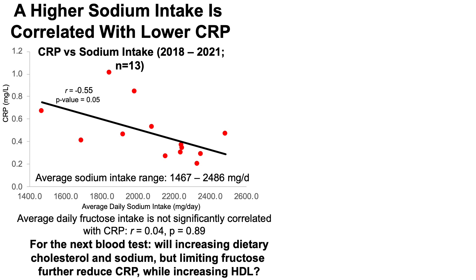With all of these data in mind for the next blood test: will increasing dietary cholesterol and sodium but limiting fructose further reduce CRP while increasing HDL? There's data that dietary cholesterol intakes up to 250 milligrams per day are associated with lowest all-cause mortality risk; going higher than 250 milligrams per day is associated with a higher all-cause mortality risk. My average daily dietary cholesterol intake was 178 milligrams per day, so I'm going to experiment getting closer to about 250 — see if that raises total cholesterol, potentially LDL, increase salt a little to get HDL up, and see if those changes bring my C-reactive protein further down below the current 0.27.